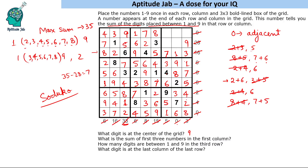Now we can simply fill the last cells. 6 is missing in one row, so 6 goes there. 2 cannot come in certain positions, so 2 goes in the correct cell, 4 follows accordingly, and 5 fills its row. Finally, 8 was missing from the last row and 8 goes there. This completes the Sudoku — normal Sudoku rules plus the special sandwich conditions.